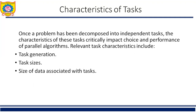In this section we shall discuss various properties of tasks and inter-task interaction that affect the choice of good mapping. Once the problem has been decomposed into independent tasks, the characteristics of these tasks critically impact the choice and performance of the parallel algorithm. Relevant task characteristics include task generation, task size, and size of data associated with the task. The following four characteristics of the task have a large influence on the suitability of the mapping scheme.